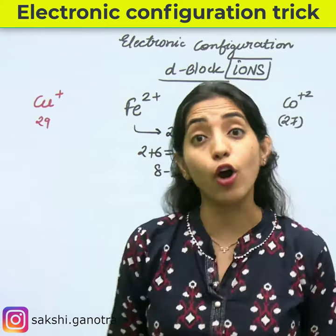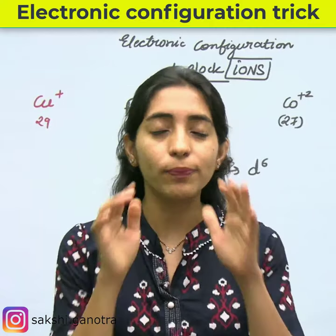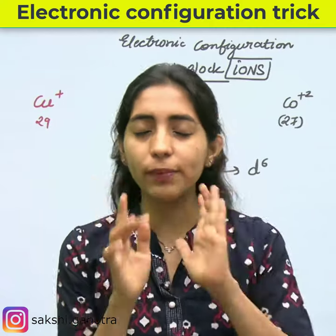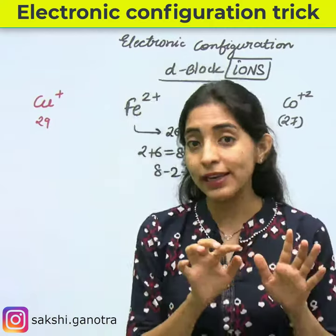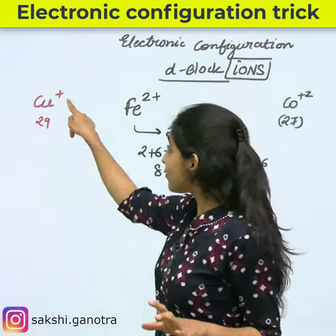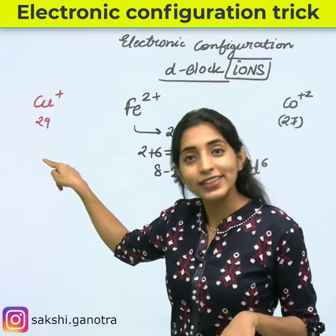Someone asks about Cu⁺ electronic configuration. Copper's atomic number is 29, so 2 plus 9 equals 11. Subtract the charge of 1 from 11, giving 10. So its configuration is D10.